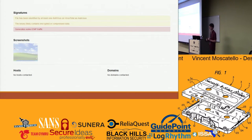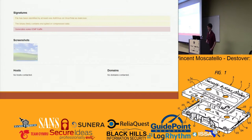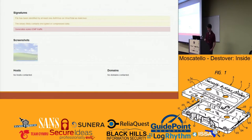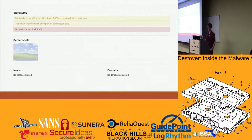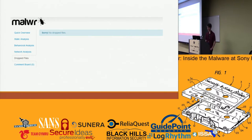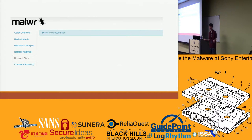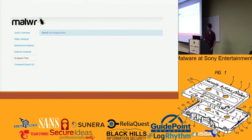It didn't exactly do what I was expecting. It said it didn't contact any hosts, didn't contact any domains, which is a little suspicious. There's some useful information — like that it might contain some encrypted or compressed data. It only produces some ICMP traffic and no dropped files. But we clicked it ourselves and it dropped this IGFX binary, so even the sandbox didn't pick up on that, which I thought was a little weird.